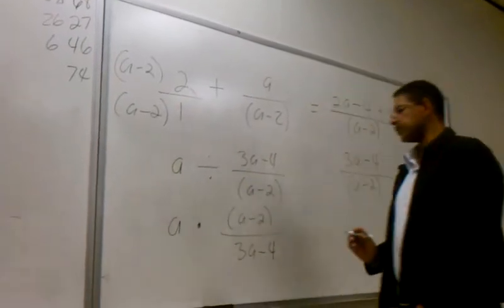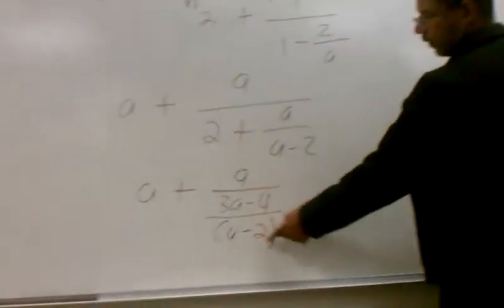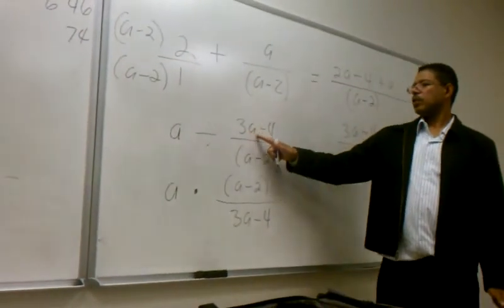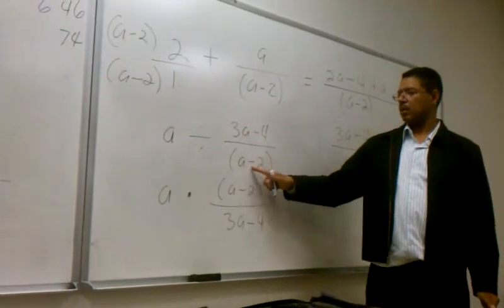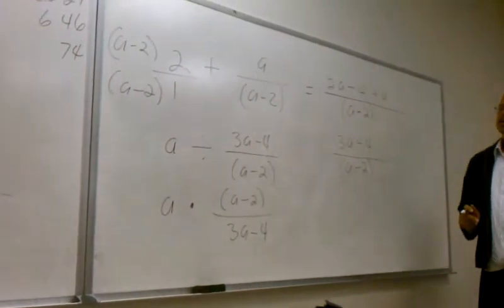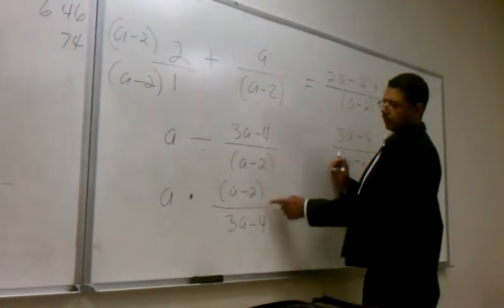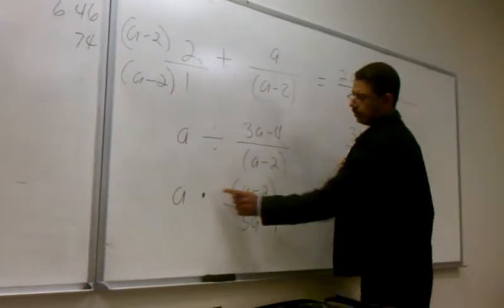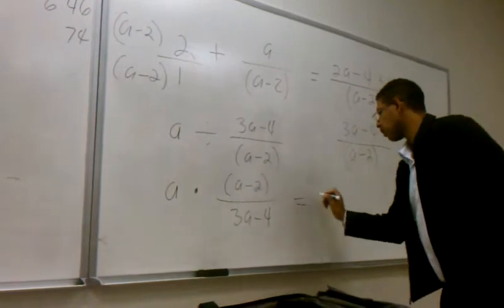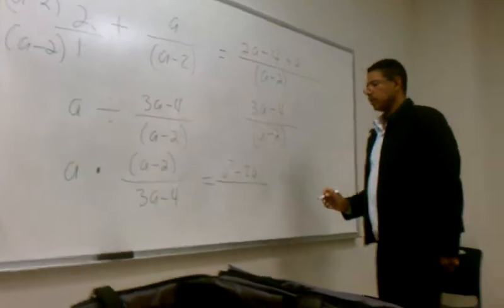So we're going to take a, change it to multiplication and flip it. I took the a and divided it by 3a minus 4 over a minus 2. When you divide, you always do the reciprocal — so I flip it. Now, what is a times a minus 2? A squared minus 2a, all divided by 3a minus 4. That's step 3.